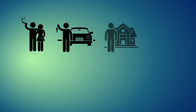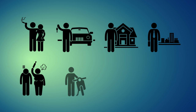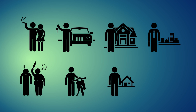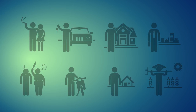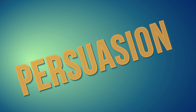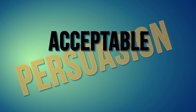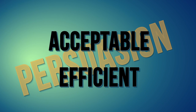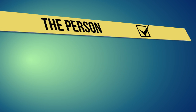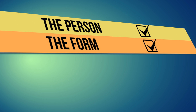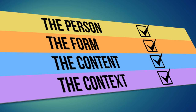Persuasion can be useful in any aspect of life. For this reason, you have to know how to use it to your advantage. Not every form of persuasion is acceptable or efficient. Our ability to persuade is linked to four elements: the person, the form, the content and the context.